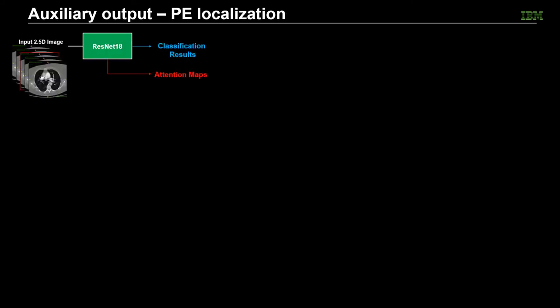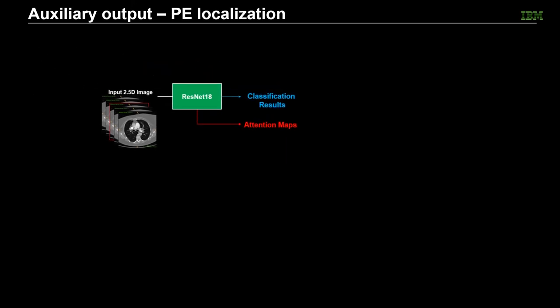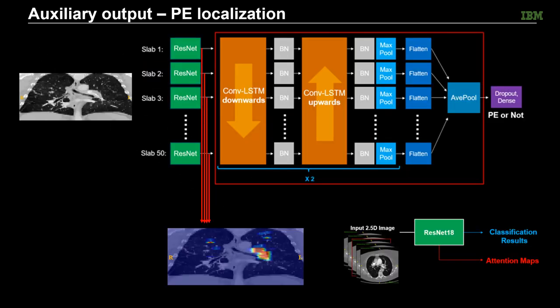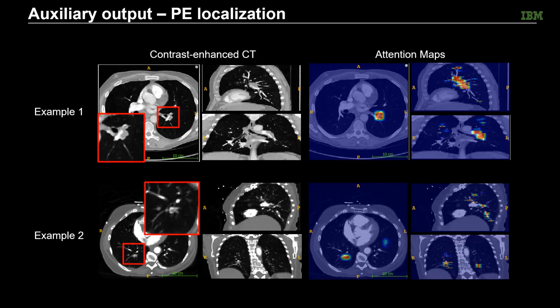One benefit of the proposed framework is its ability to provide localized attention maps. Recall that the ResNet in stage 1 can output attention maps for an image slab. By integrating the attention maps for each slab together, we can have a patient-level attention map that indicates possible PE lesions. Here we show two examples. The first column is the contrast-enhanced CT images, and the second column is the corresponding attention maps. As can be seen, the highlighted attention focus regions can accurately identify the PE lesions, which could potentially serve as a quick and convenient tool to help radiologists localize PE lesions. Note that this PE localization information cannot be used for diagnostic purposes because of potential false positives; instead, they should only be used as references.